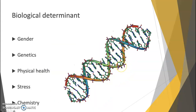Let's look at each determinant. The biological determinants include gender, genetics, physical health, stress, and chemistry. You might feel there are some I've missed — please go ahead and add those. As we go through this, see if you can tick off things from your own list as determinants of well-being.